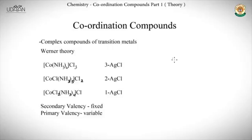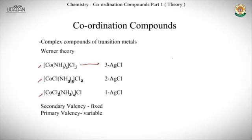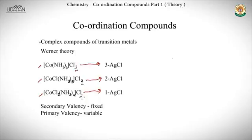Next, we need to understand Werner theory. Werner theory talks about how coordination compounds ionize when dissolved in a solvent. What Werner did was take three compounds and dissolve them. When you dissolve the first compound, you get three moles of AgCl; the second gives two moles of AgCl; and the third gives one mole of AgCl per mole of the complex compound.